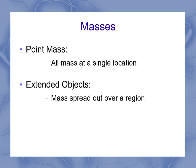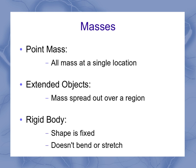One special type of extended object is a rigid body. Rigid bodies are ones where the shape is fixed. Specifically, that means it doesn't bend or stretch.